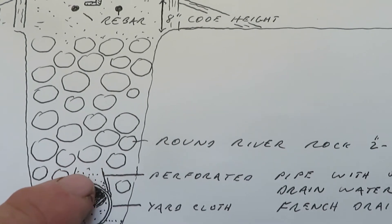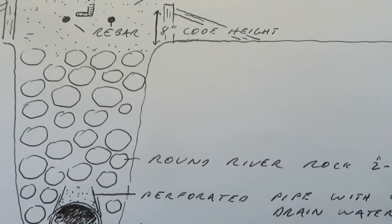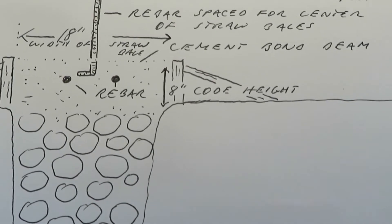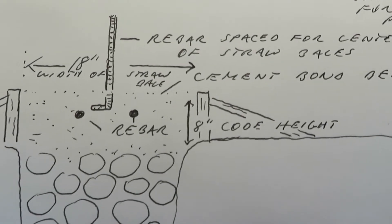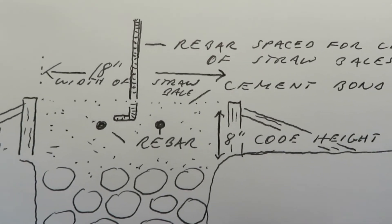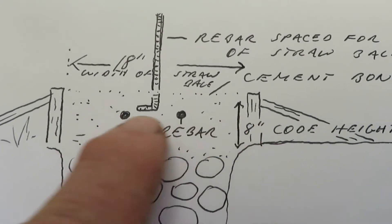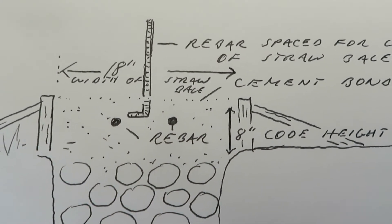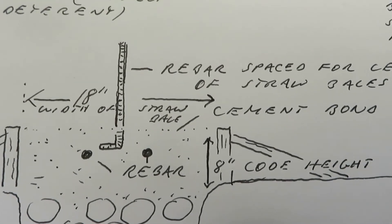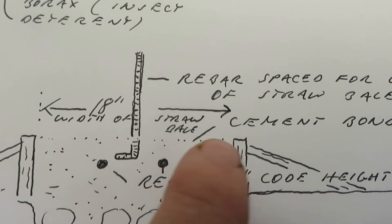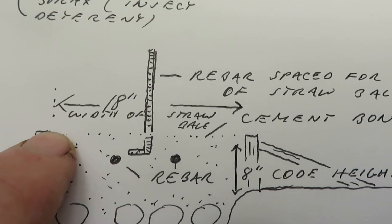Eight inches was a code height for this crown of cement on top of the cobble trench foundation. This had to be 18 inches wide for the straw bales.